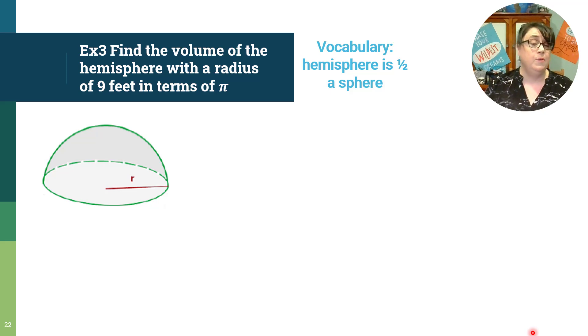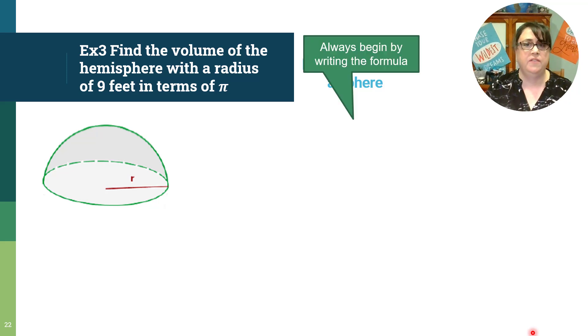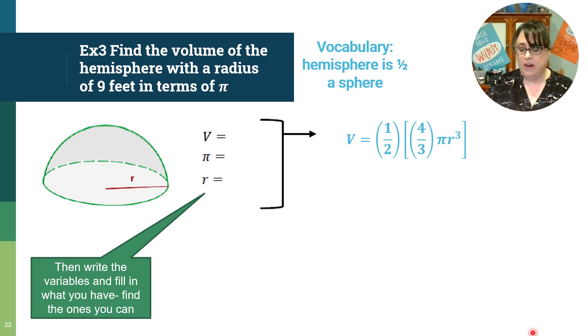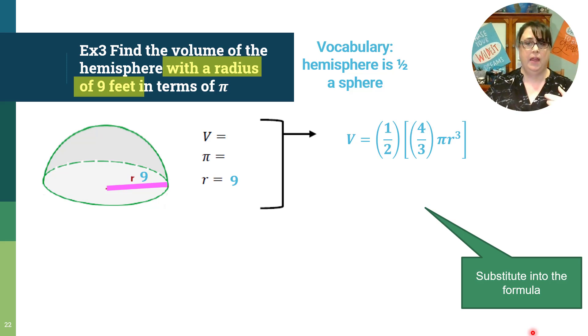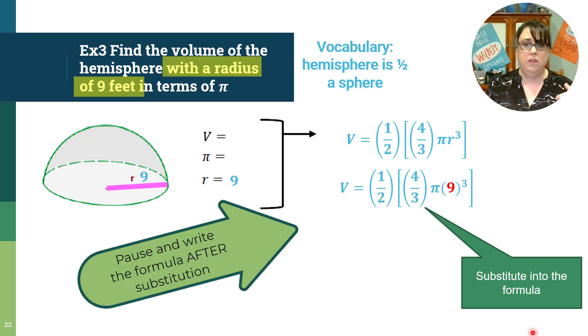Find the volume of the hemisphere with a radius of 9 feet in terms of pi. I like when things are in terms of pi because I don't have to deal with a decimal. How are we going to start? The same way we start everything else. We begin by writing the formula. Volume equals four thirds pi r cubed, but we are only doing the hemisphere, so we're only going to do half of it.